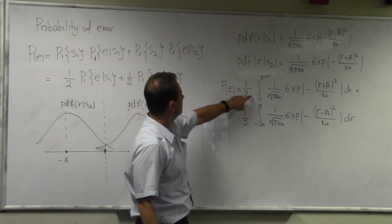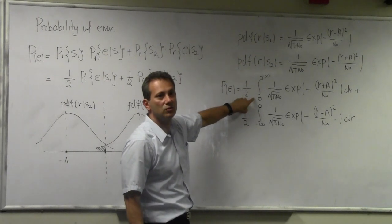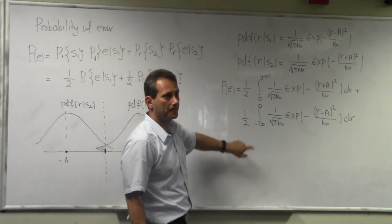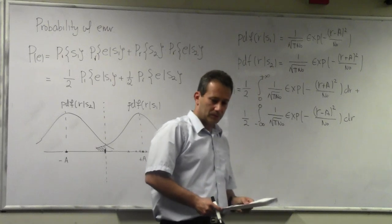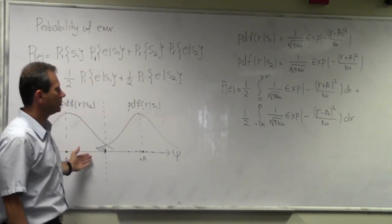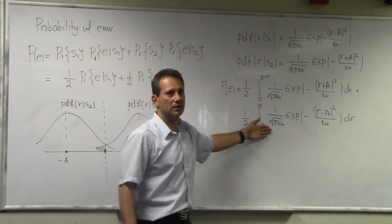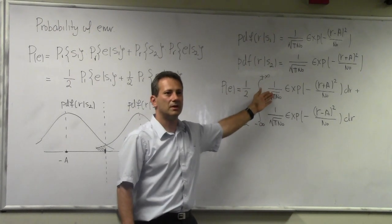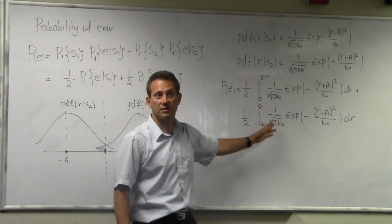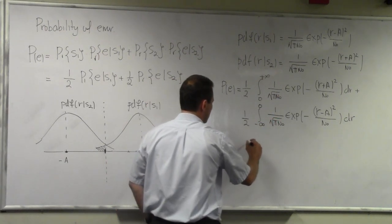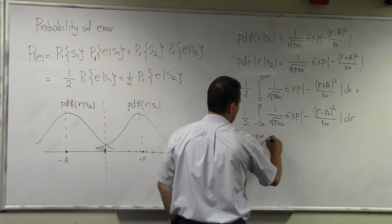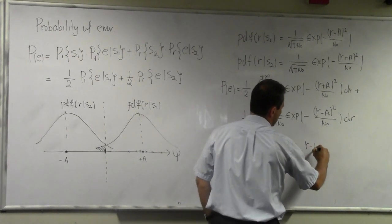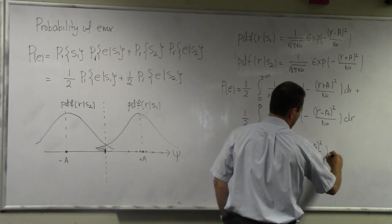By the symmetry of this problem, these two integrals are the same. So we have one-half of something plus one-half of that same thing, which equals the whole thing. So the probability of error can be calculated as the integral from 0 to +∞ of (1/√(πN₀)) × e^(−(R−A)²/N₀) dR. This is our good old friend — the normal distribution, Q function, and all that. We solve these integrals by normalizing and then using Q tables.